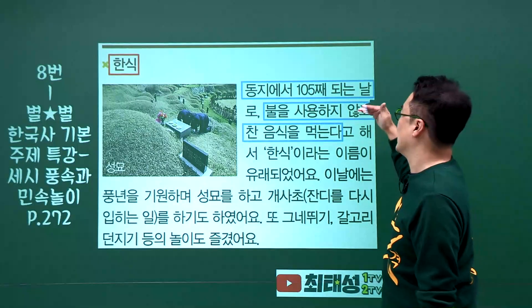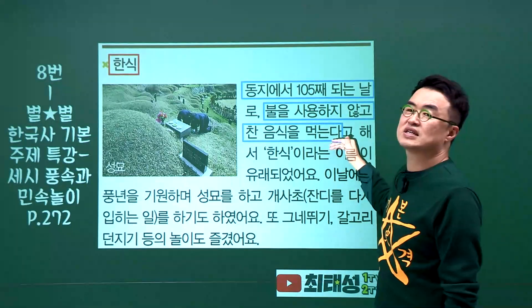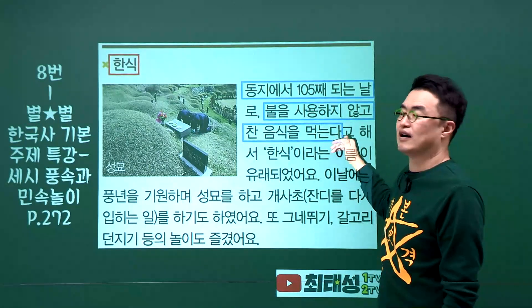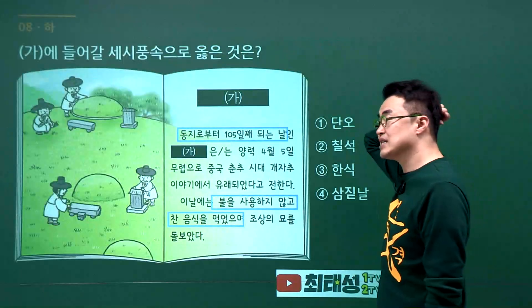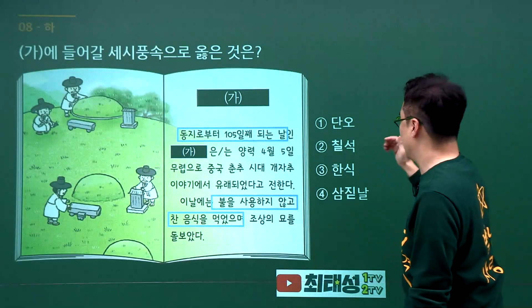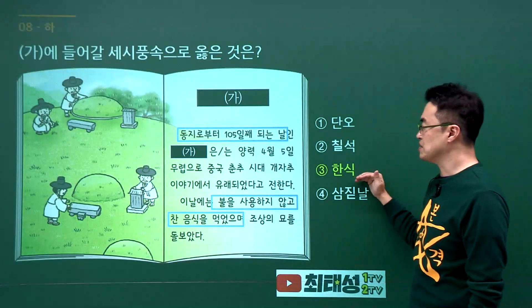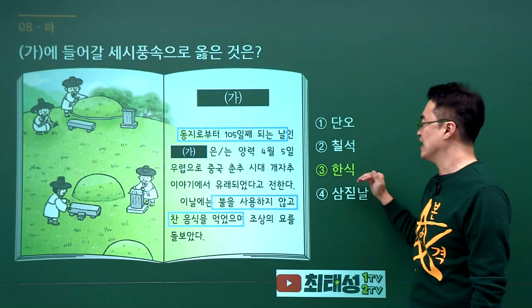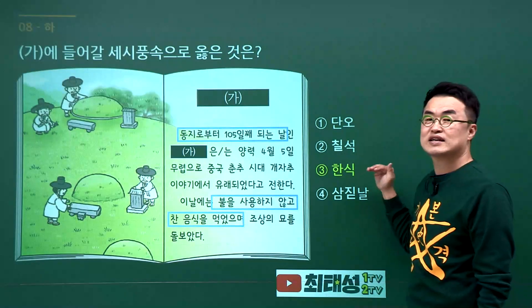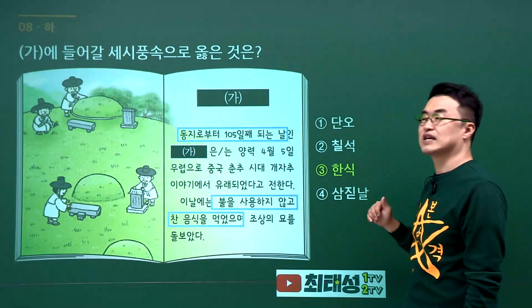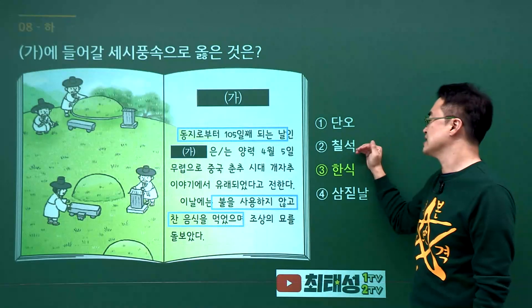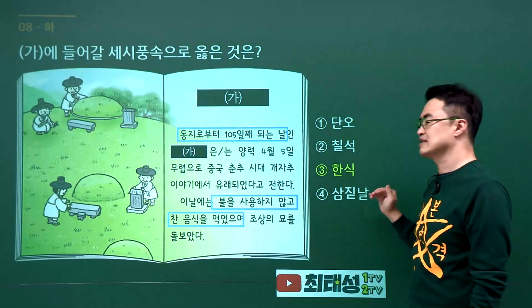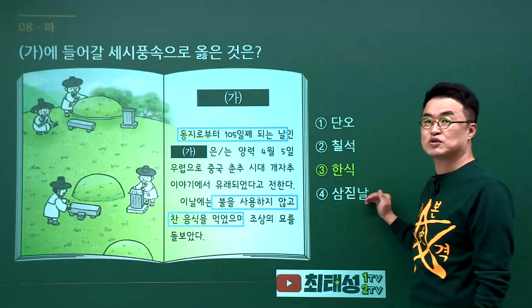세시풍속 문제입니다. 찬 음식을 먹는 세시풍속은 한식입니다. 정답은 3번입니다. 단오는 5월, 칠석은 7월, 삼짇날은 3월입니다. 물론 다 음력입니다.